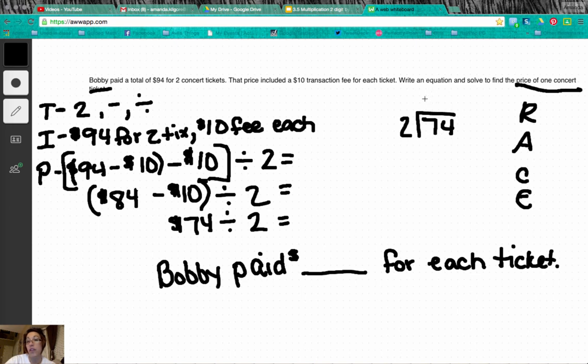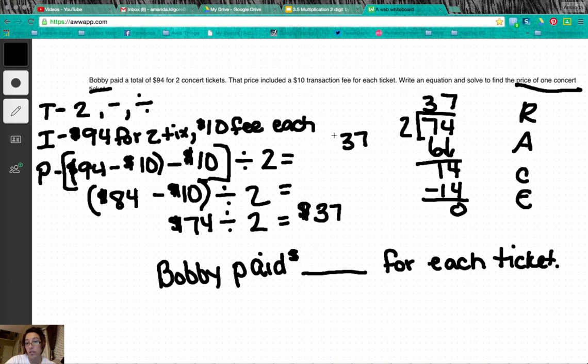7 times 2 is 14, 0. So equals $37. Now we must check our work. 37 times 2 - 7 times 2 is 14, 3 times 2 is 6, 6 plus 1 is 74. 74 plus $10 is $84. 84 plus another $10 is $94. Our answer checks. So he paid $37 for each ticket.